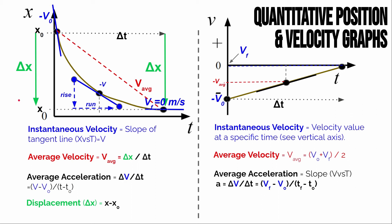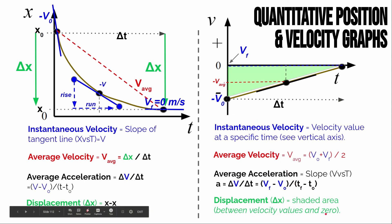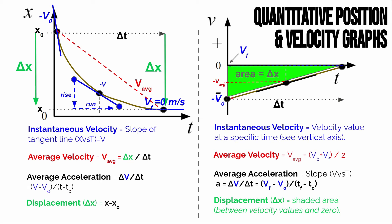Finding displacement on a velocity-time graph is not quite as straightforward, but it's still doable. Earlier in this unit we determined that displacement can be found using the area between the velocity values and the zero axis. If you shade in that area, it represents the object's displacement — how far it moves and in what direction — from the beginning to the ending time. For constant velocity this area is a rectangle, but when velocity changes we get a triangle, so we use the formula: one-half × base × height.